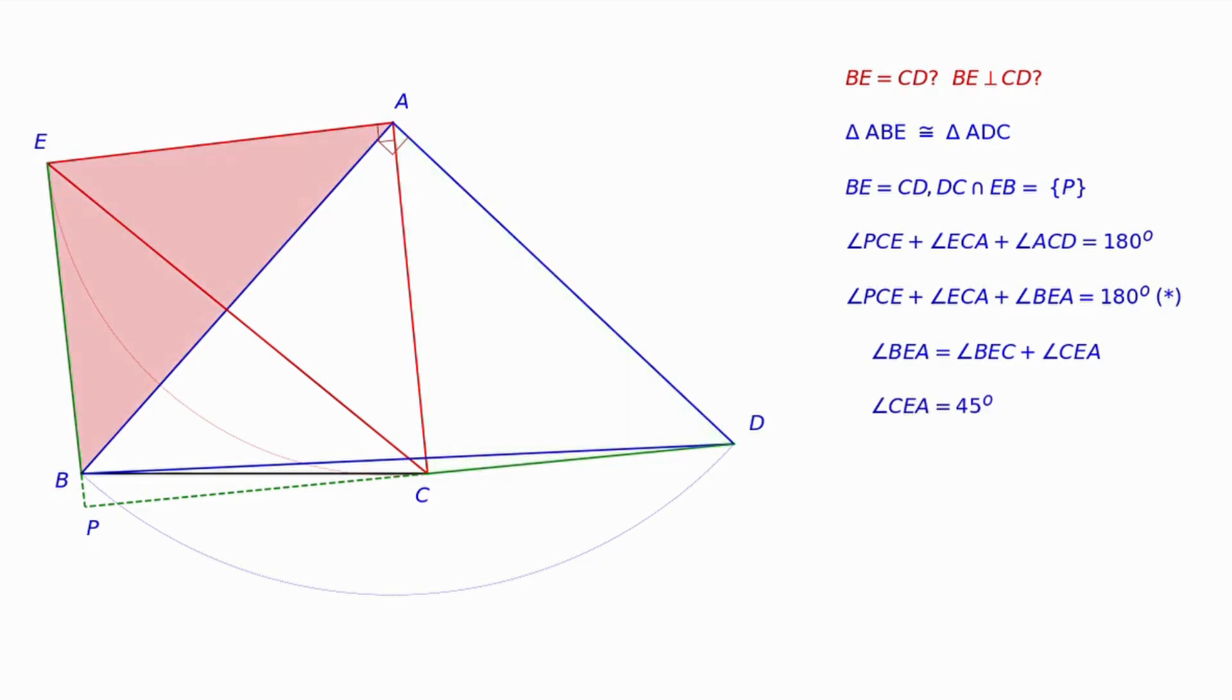Furthermore, angles CEA and ECA are both equal to 45 degrees due to the fact triangle EAC is isosceles, or segments AE and AC are equal, and right angled at A.